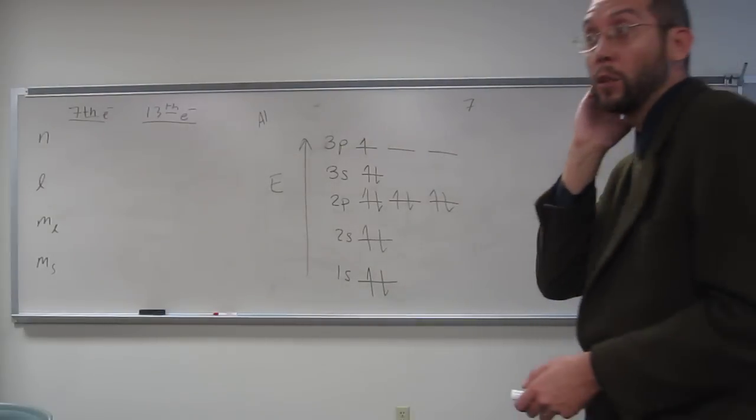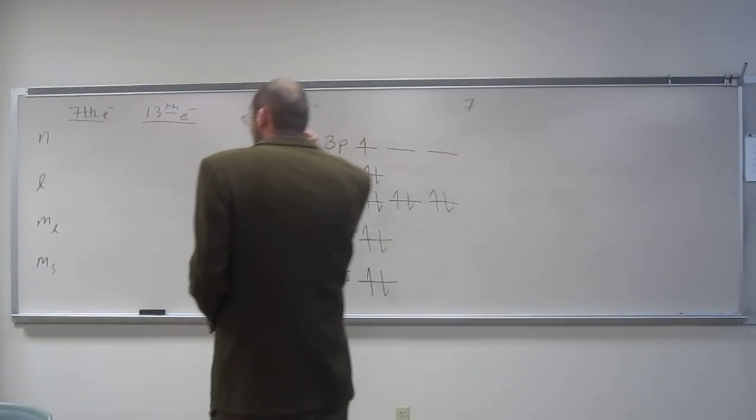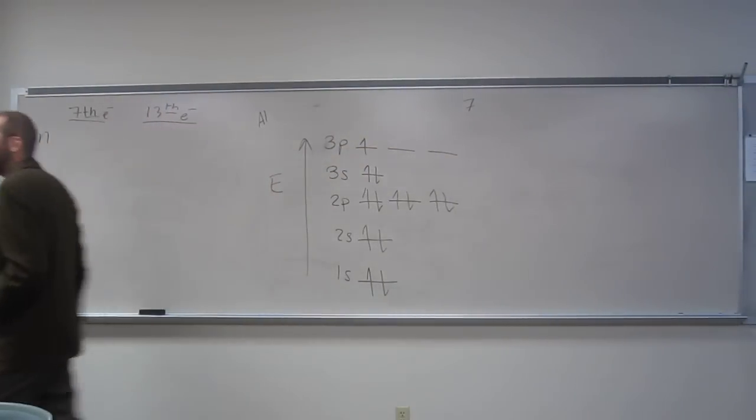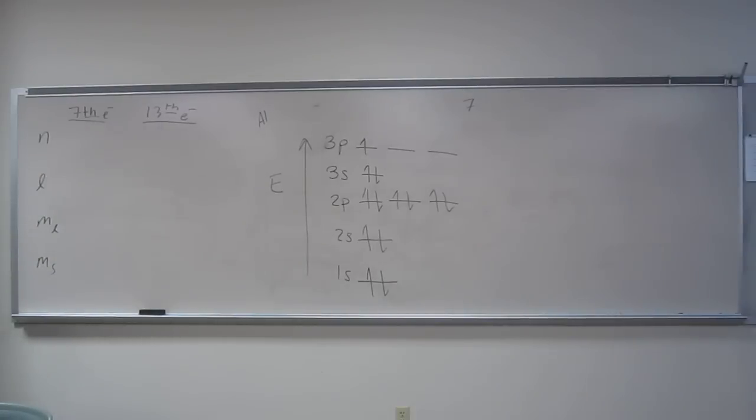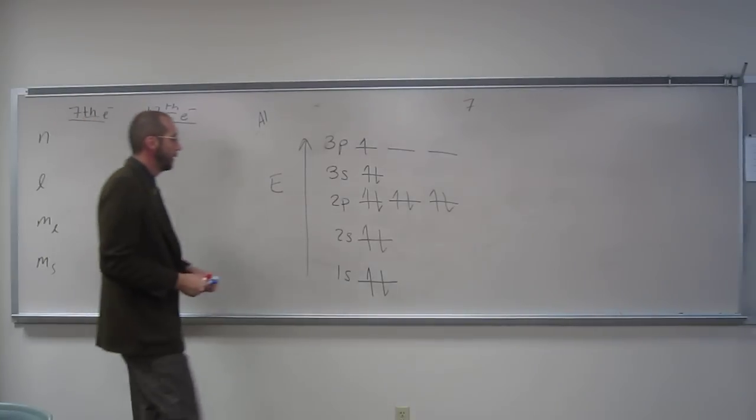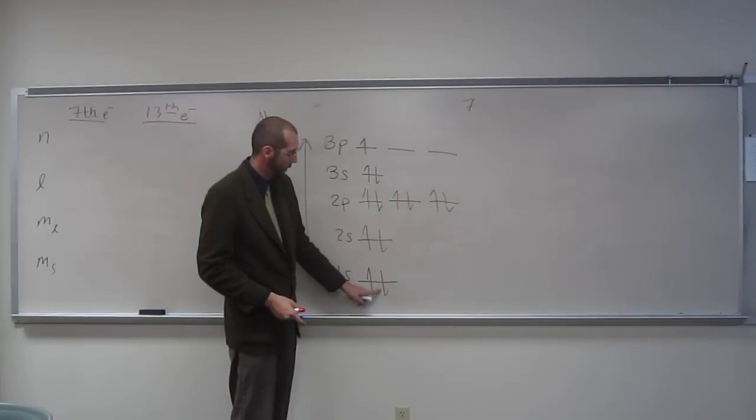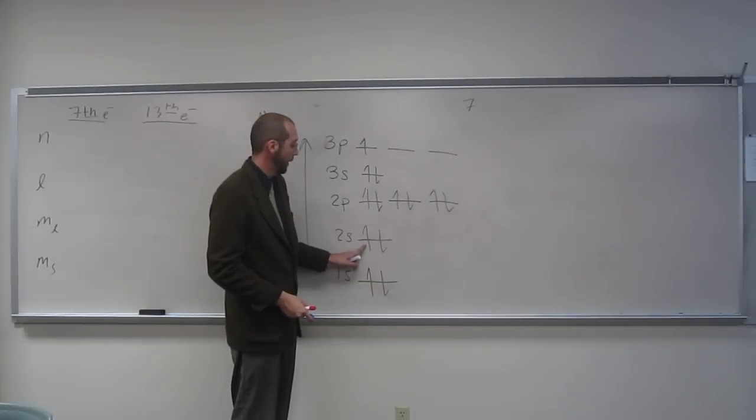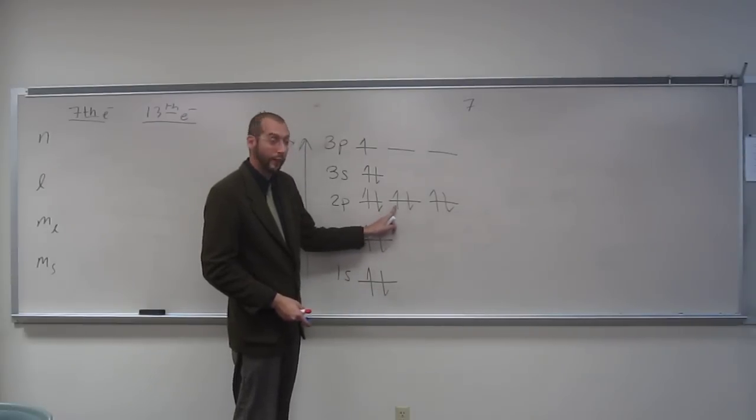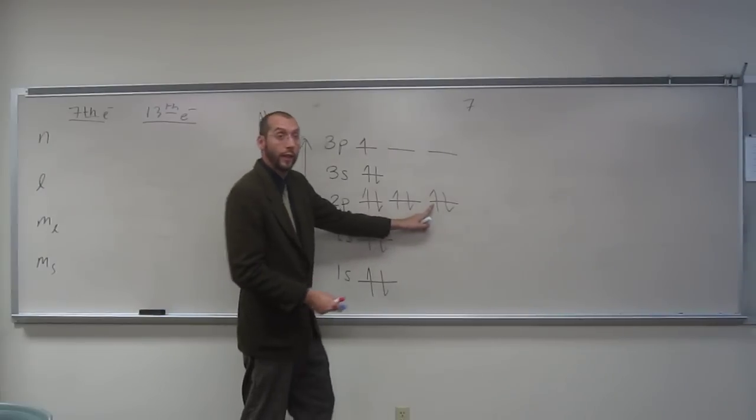So let's count which ones these are, and we'll circle them with our red and blue pens here. So, help me out. One, right? Two, right? Three, four, five, six, seven. So that one's 7 there.